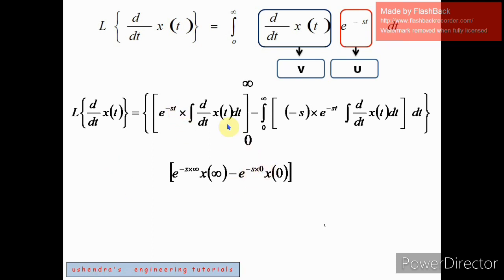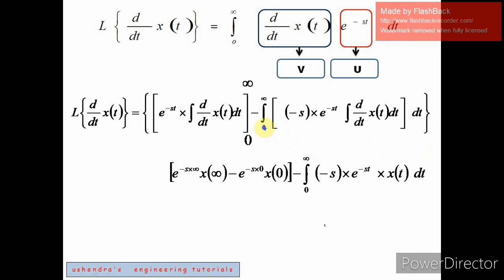When we plug in the lower limit, in place of t we have zero, giving minus e^(-s times 0) times x(0). This is followed by minus the integral from 0 to infinity of minus s times e^(-st). The integration and differentiation cancel, leaving x(t) dt. So we have minus s times the integral from 0 to infinity of e^(-st) times x(t) dt.